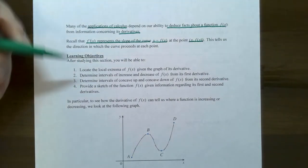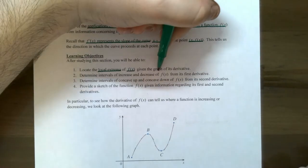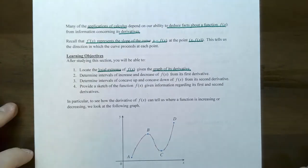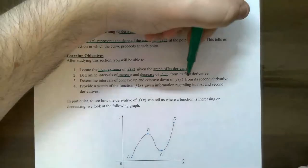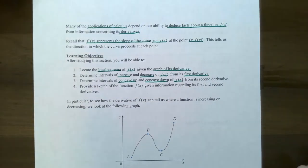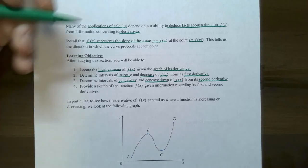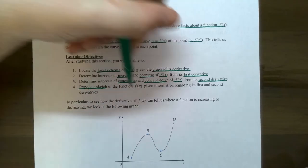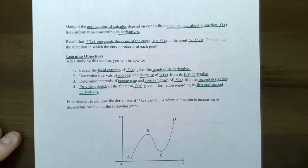In this section we're going to look at how to locate local extrema — local max and local minimum — for the original function from the graph of the derivative. How do you determine intervals of increasing and decreasing from the first derivative? How do you gain information about concavity — concave up and concave down — from the second derivative? And once you have that information, how do you provide a sketch of the function using only the first and second derivatives?